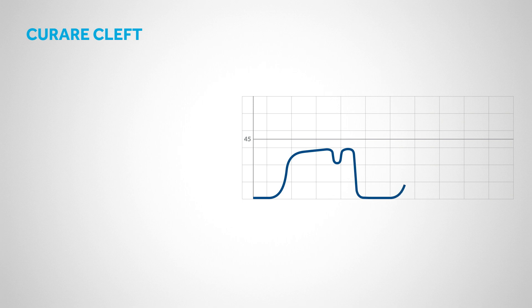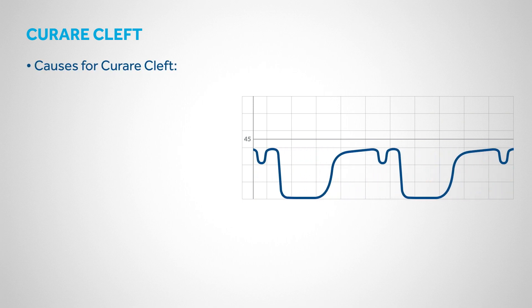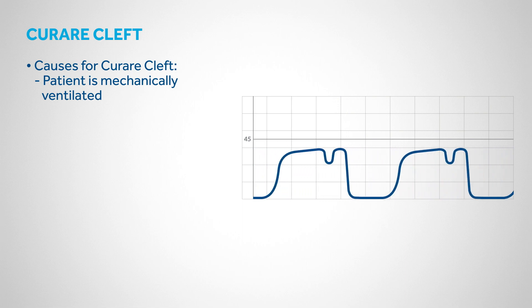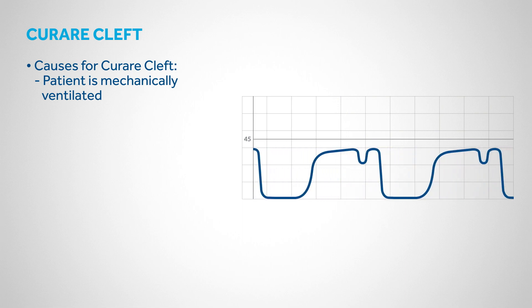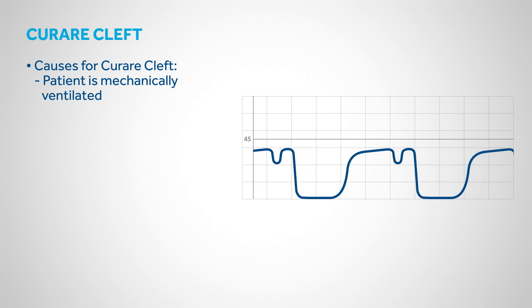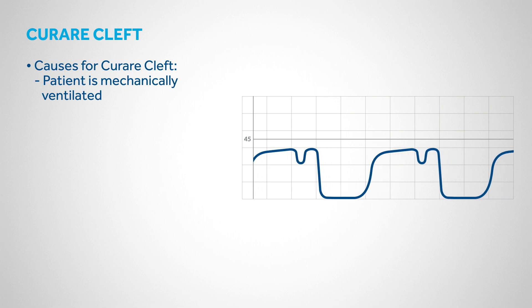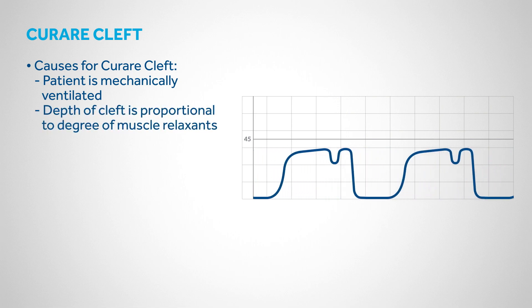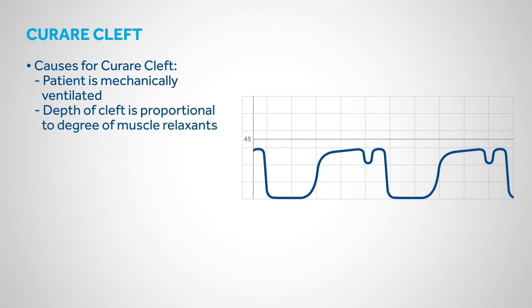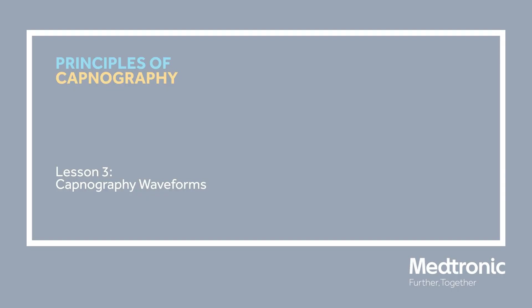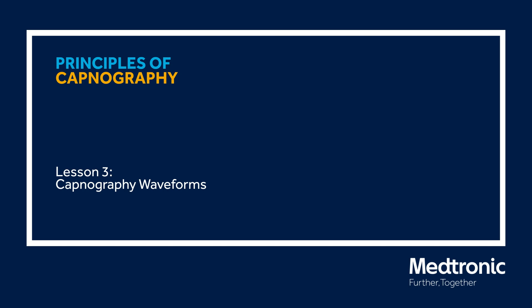The curare cleft capnogram is rarely seen. It occurs in mechanically ventilated patients who make an effort to breathe. With a feeble inspiratory effort, some fresh gas is sucked from the ventilator tubing and past the capnometer, generating this pattern. The depth of the curare cleft is proportional to the degree of muscle relaxants that the patient is on. This concludes Lesson 3, which identified and described normal and abnormal capnography waveforms.